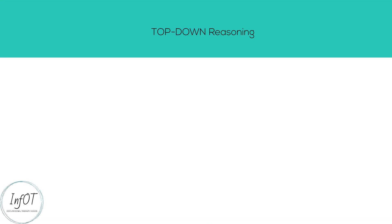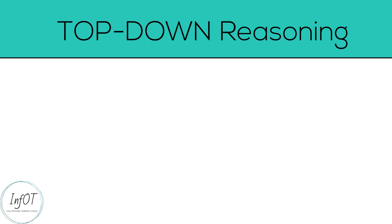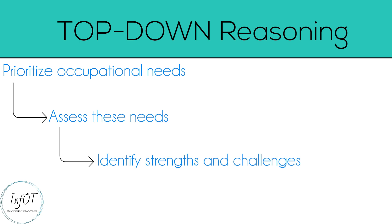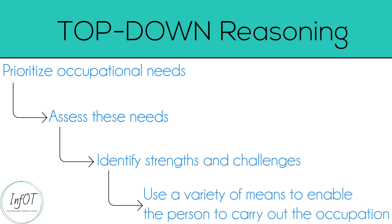When following top-down reasoning, first we prioritize the occupational needs, secondly we assess them, we then identify strengths and challenges, and finally we use a variety of means to enable occupational performance.